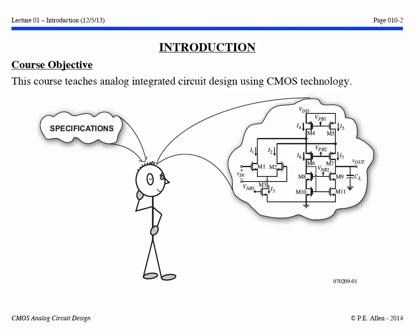On this slide we introduce the course objective, which is to teach analog circuit design using CMOS technology. The graphic here shows a goal of going from the specifications and being able to come up with a first cut design that would be used as a starting point for simulation and the design process.